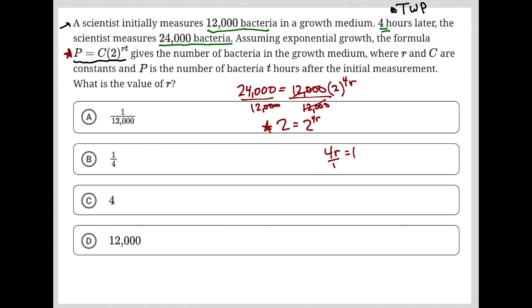So how does that work? Well, if I divide both sides by four, that tells me that R must be equal to one-fourth. And that is why choice B is the correct answer here.